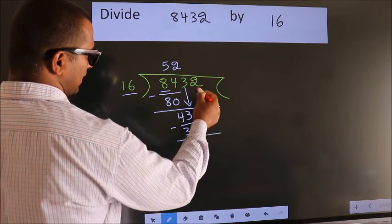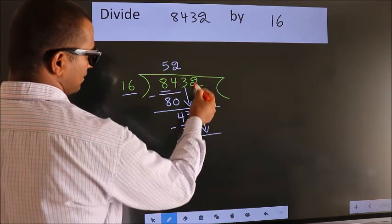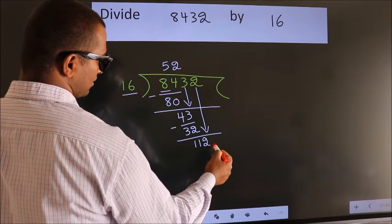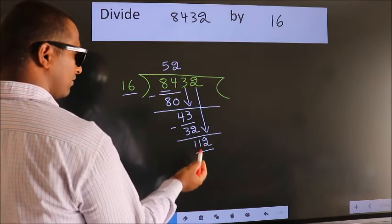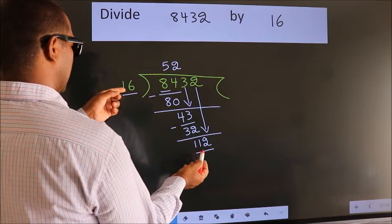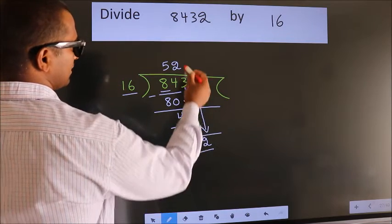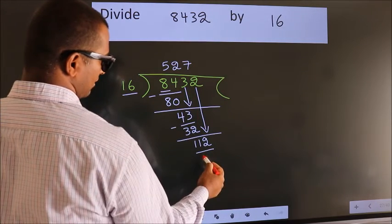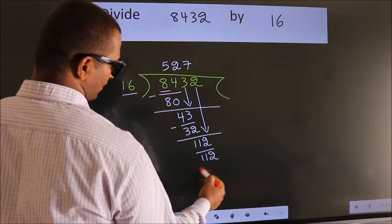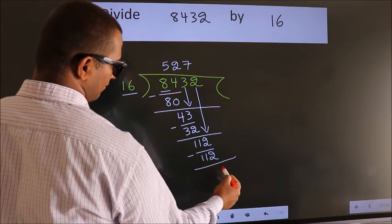After this, bring down the next number. So 2 down. So 112. When do we get 112 in the 16 table? 16 times 7 equals 112. Now we subtract. We get 0.